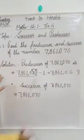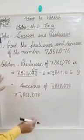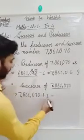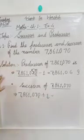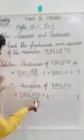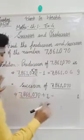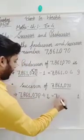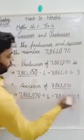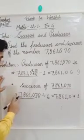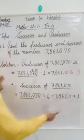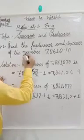Now let us find the successor of 7,861,070. To find the successor, we add 1 on its ones place digit. The ones place digit is 0, and 0 plus 1 is 1. We write the remaining digits as same. So the successor of 7,861,070 is 7,861,071. Here we have the complete solution of this question.